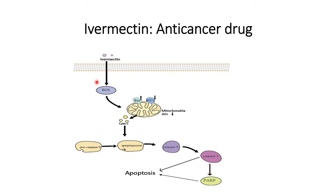The first pathway shown relates to PARP activation. Ivermectin initiates and activates ROS, which leads to upregulation of the BAX gene and downregulation of the BCL2 gene. It also affects the mitochondrial membrane, making it more permeable.